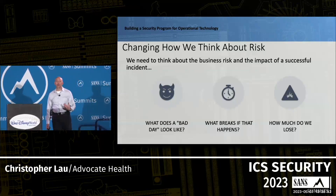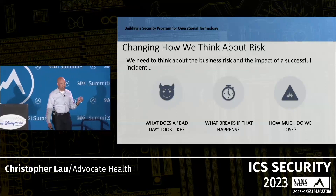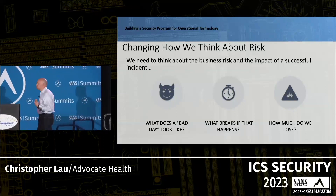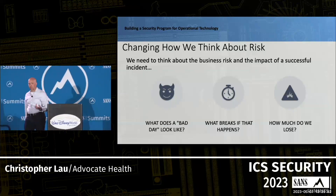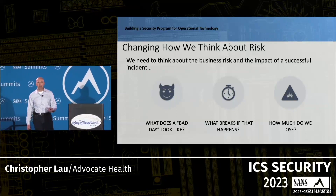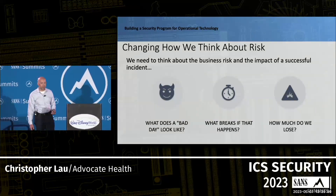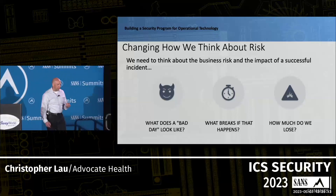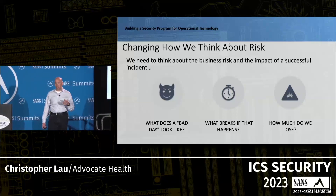How do we know that we're protecting the right things? We could be protecting something completely non-essential. I work in healthcare, so OT takes a different meaning — there are literally lives at stake. On top of that, we have the medical device component that other fields and infrastructure don't have. So we wanted to change the way we think about risk: understanding in business terms what does a bad day look like, what breaks if that happens, is it all hell breaking loose or is it manageable, and how much do we lose?